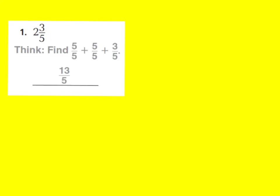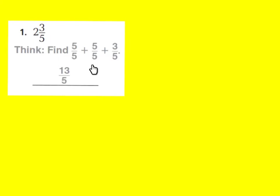Let's take a look at question number 1. Our goal is to change our mixed number to an improper fraction, or a fraction greater than one whole. We're going to look at our wholes. We have two wholes and we know that the wholes are divided into fifths. So this first whole has a value of 5 fifths, the second whole has 5 fifths, and then we have 3 fifths.